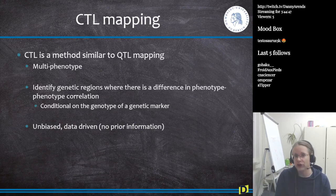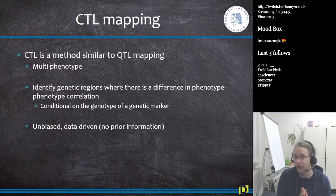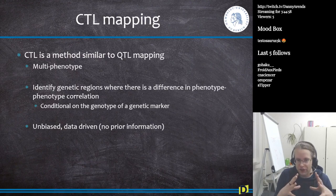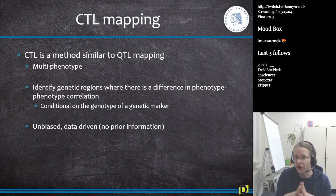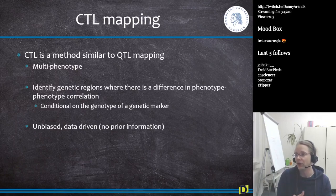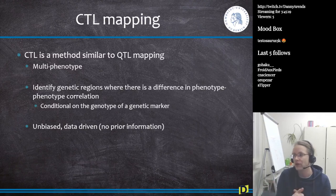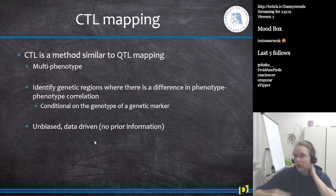CTL mapping is very similar to QTL mapping. The difference is that it's multi-phenotype — instead of looking at a single phenotype at a time, we're looking at pairs of phenotypes. What we want to do is identify genetic regions where there's a difference in the phenotype-to-phenotype correlation, conditional on the genetic marker we're currently looking at. It's an unbiased data-driven method with no prior information — no type of bias flows into it — the same as QTL mapping: we just measure genotypes, we measure phenotypes, and then we do the association analysis.